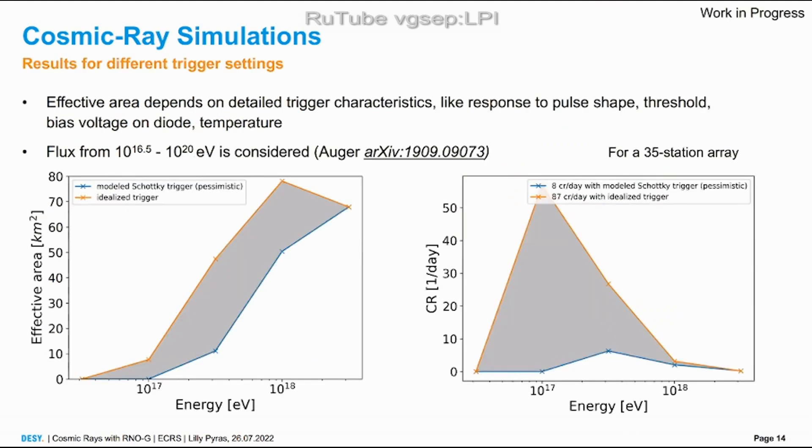What we find out is that the effective area really depends on that trigger shape. So if we use the optimistic way we have a bigger effective area, and if we use the pessimistic model of the diode we lose a lot of sensitivity below 10^17 electron volts.